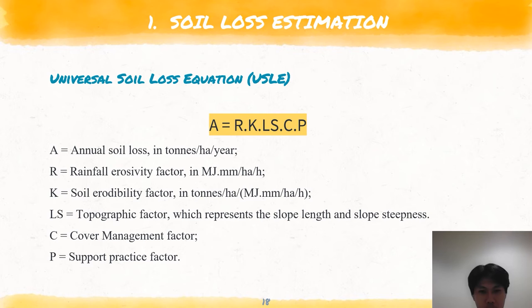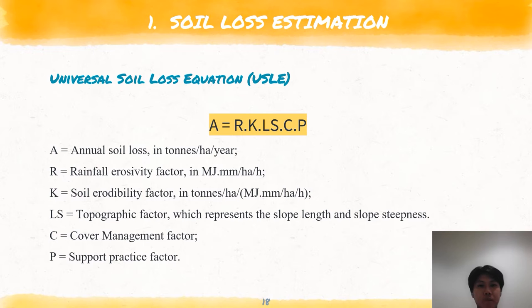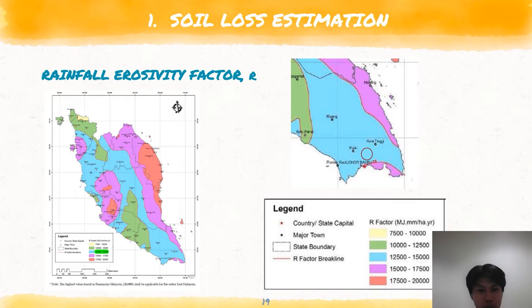For sediment control, we calculate the soil loss estimation using the USLE. We choose to assess the soil losses under different cropping systems and land management practices. A is the annual soil loss; R is the rainfall erosivity factor; K is the soil erodibility factor; LS is the topographic factor representing slope length and slope steepness; C is the cover management factor. The rainfall erosivity factor R relates soil loss to rainfall parameters and accumulates the rainfall erosivity of individual rainstorm events averaged over multiple years. In this project, the R factor is taken from the map — the R value is 15,000, which corresponds to the Ulu Tiram, Johor Bahru region.